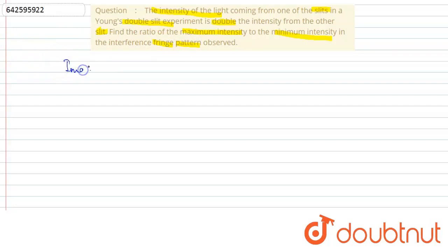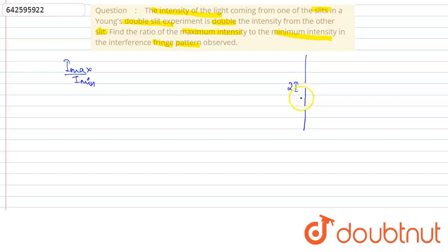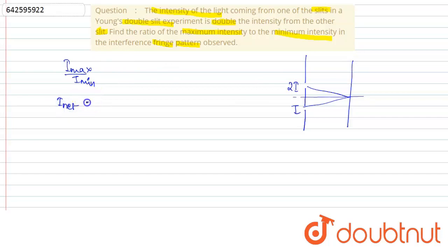We have to calculate the ratio of I_max to I_min. In a double slit experiment there are two sources, S1 and S2. Generally they have equal intensity, but in this question one source has double the intensity of the other, due to which a different fringe pattern is seen on the screen.